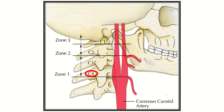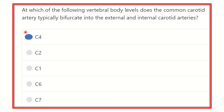In this picture, we can see the common carotid artery bifurcating into two branches: the external carotid artery and the internal carotid artery. Looking at the vertebra at this level, this is the cervical four vertebra. Counting from cervical one, then two, then three, then four — at this cervical four level, the common carotid artery divides into the external carotid artery and internal carotid artery. So our final answer is cervical four.